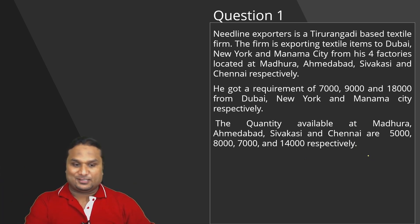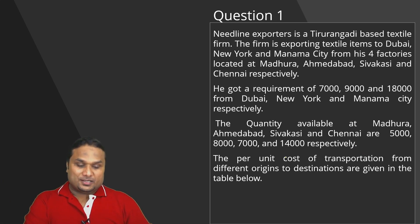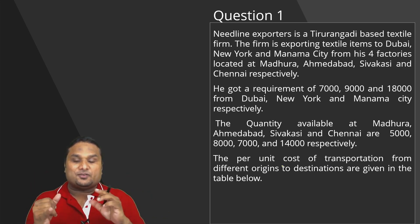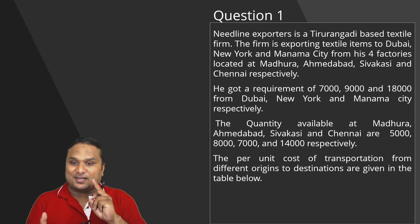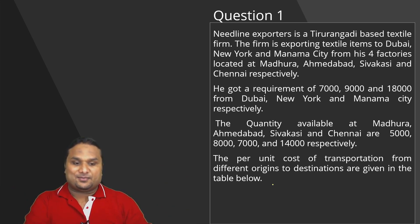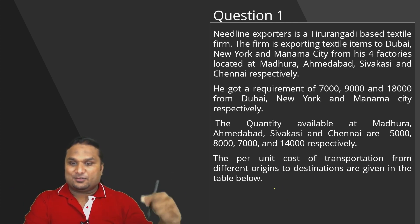So this is 34,000 and this is 34,000. Now, the per unit cost of transportation from different origins to destinations — origins being our four factories in Madura, Ahmedabad, Shivagashi, and Chennai, and destinations being Dubai, New York, and Manama City — are given in the table, which I will show you in the next slide.